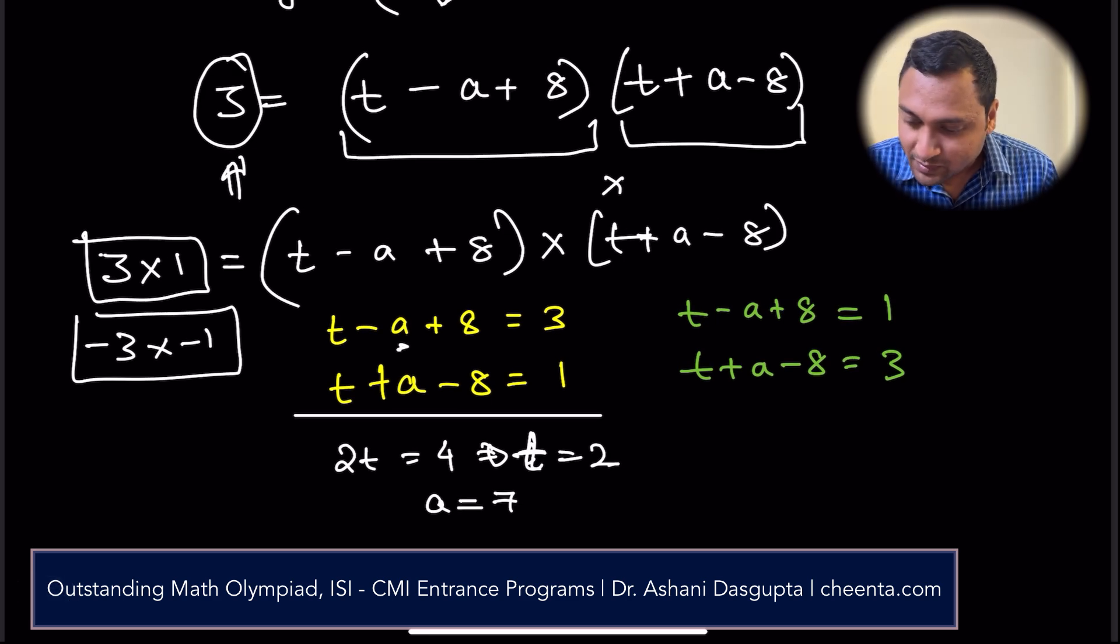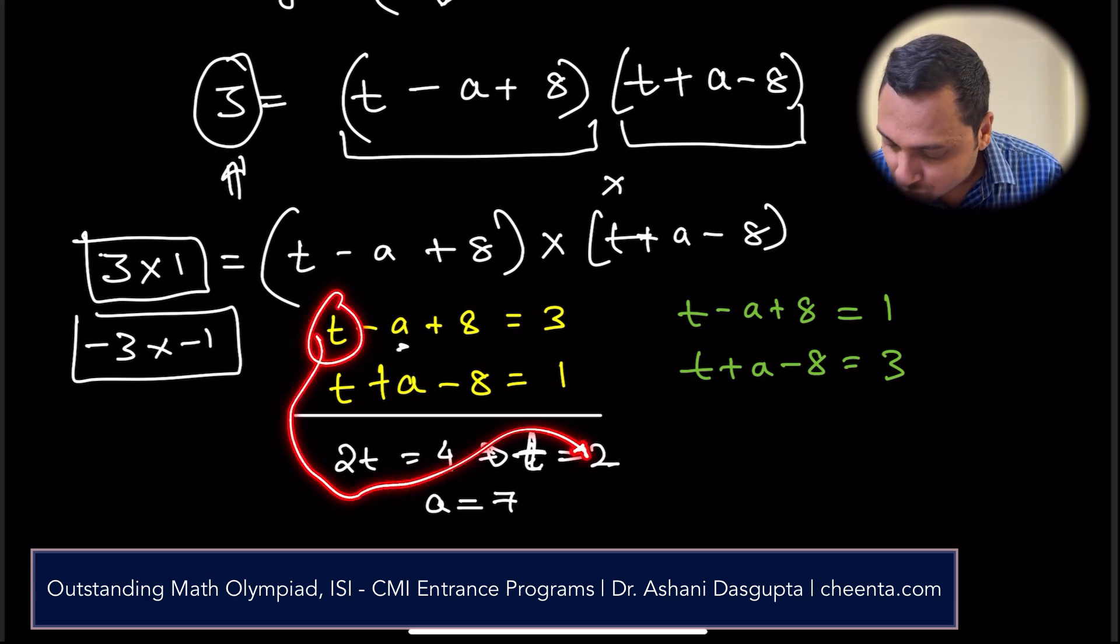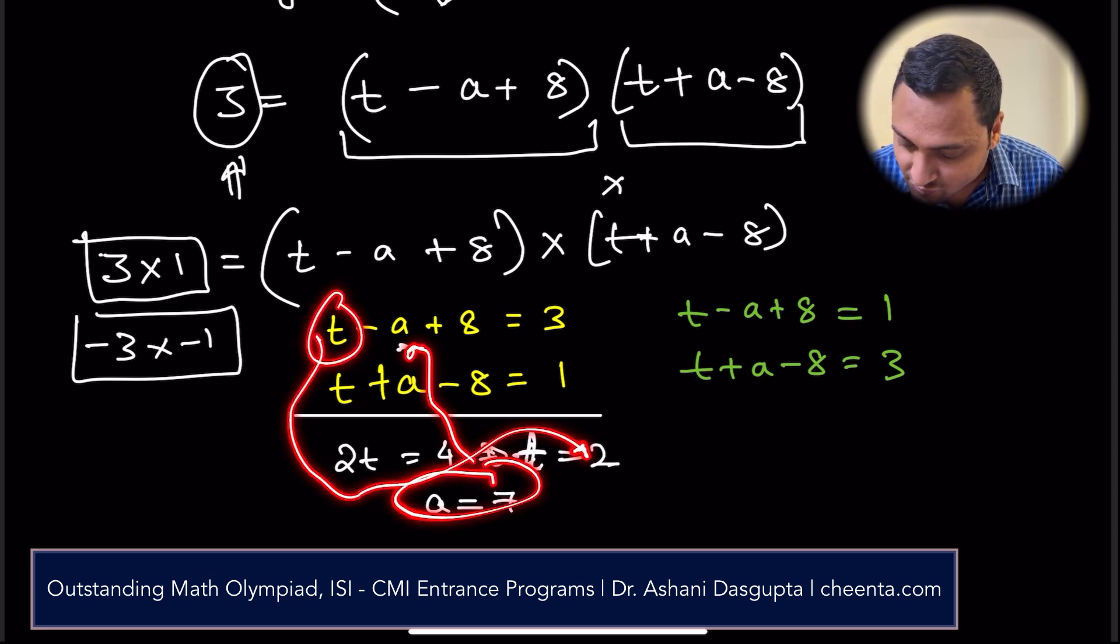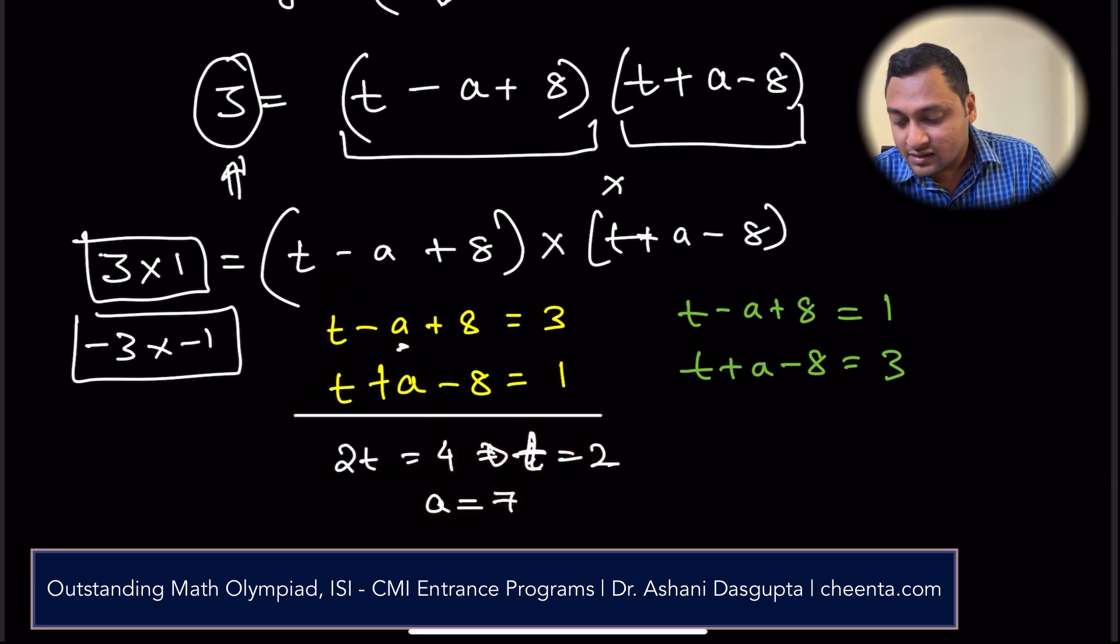If you can just plug this in and check. t equals to 2 means a equals to 7. 2 minus 7 is minus 5, so 8 plus minus 5 is 3. That works out.